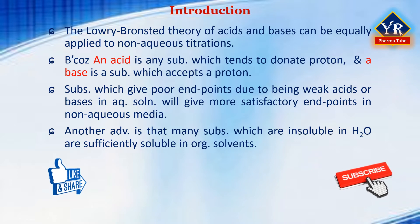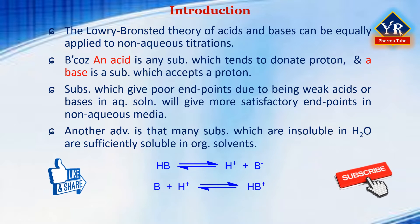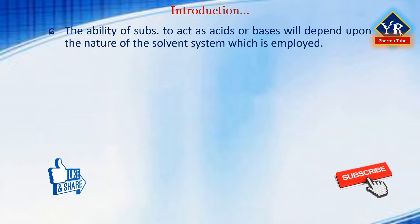In the Lowry-Brønsted theory, any acid HA as shown in the equation is considered to dissociate in solution to give a proton H+ and a conjugate base B-, while any base B will combine with a proton to produce a conjugate acid HB+. The ability of substances to act as acids or bases will depend very much upon the nature of the solvent system which is employed.